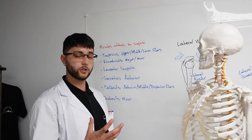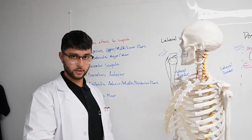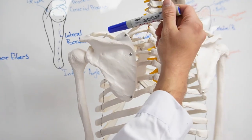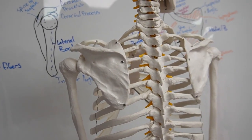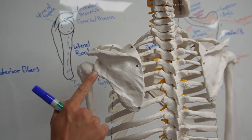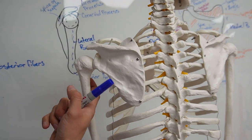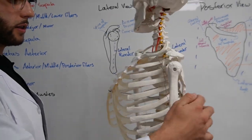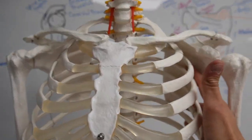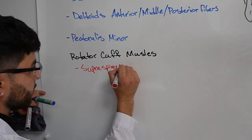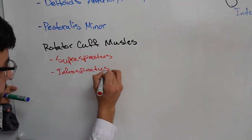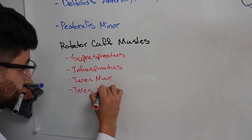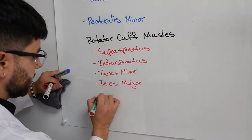Now we're going to talk about the muscles that originate from the scapula and insert onto the humerus — the rotator cuff muscles. You've got the supraspinatus, starting at the supraspinous fossa. Then you've got the infraspinatus and the teres minor. From there, there's teres major, which attaches on the inner portion of the humerus. And if we look at the inner portion of the scapula, you've got the subscapularis.